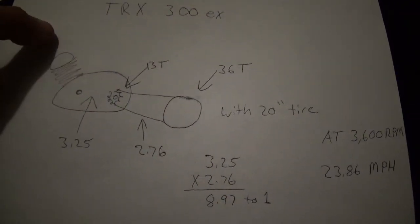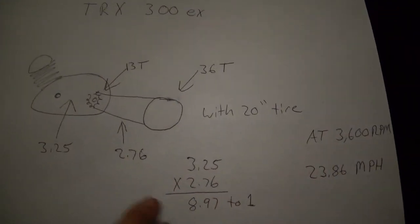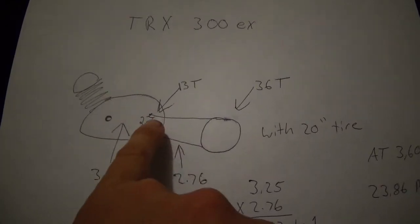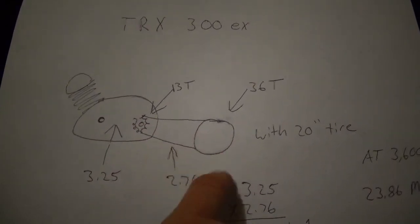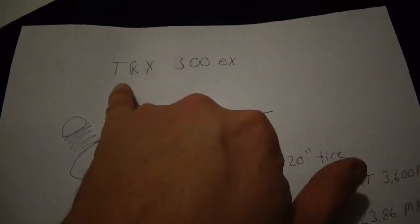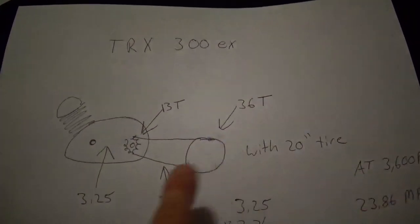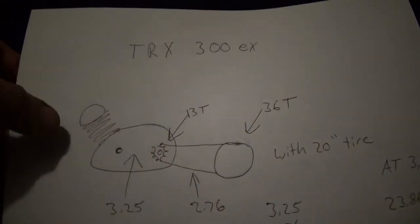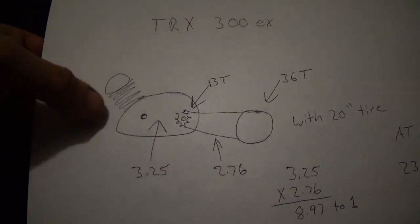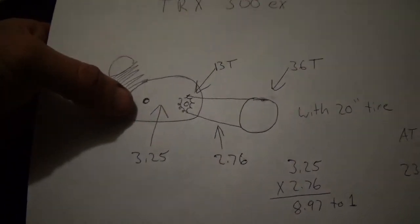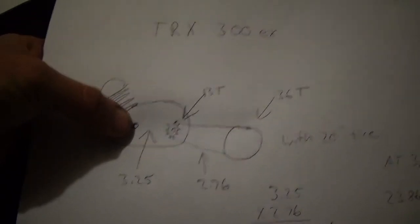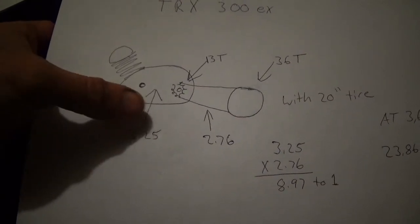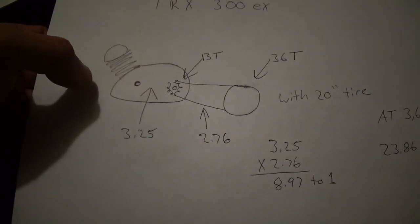This figure here is based on 3600 RPM. One of the things you also got to consider is it's just not your gear ratio from your sprocket to your axle. This is a 300 EX. Stock 300 EX gear ratio is 2.76, 13 teeth, 36 teeth on the back. You also have another gear ratio that oftentimes people don't realize. This crankshaft right here, on this particular engine, 300 EX, runs around 3.25.